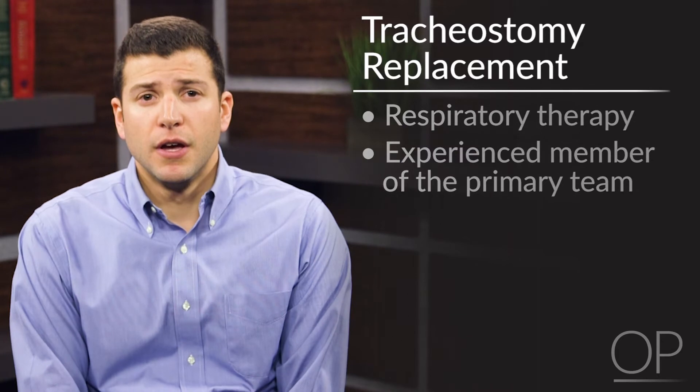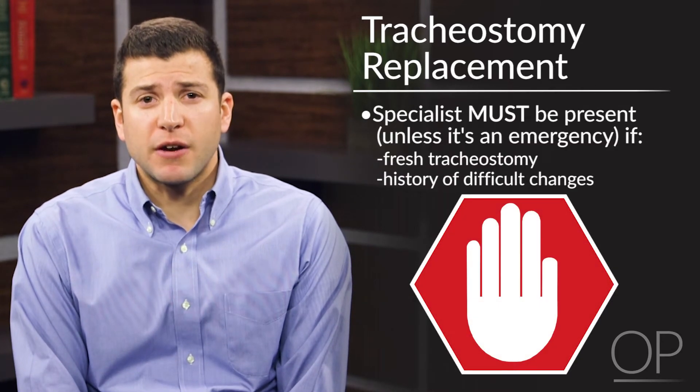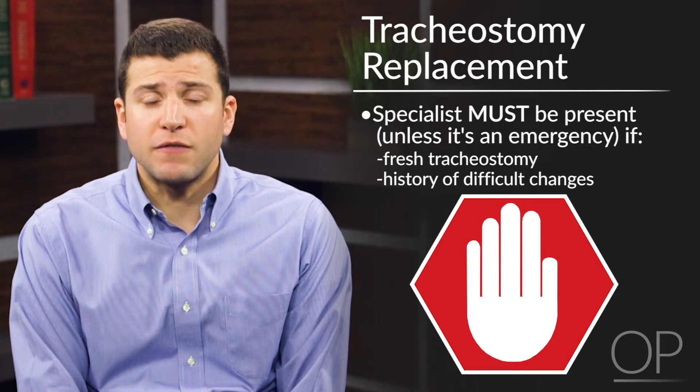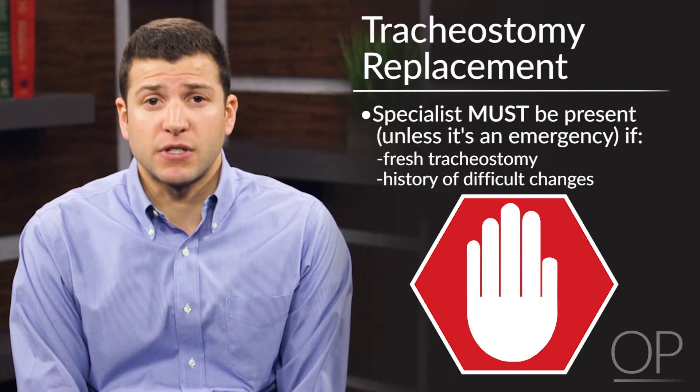If none of these maneuvers helped, the tracheostomy tube may need to be replaced. If this is a well-established tracheostomy tract, changes may be performed by respiratory therapy or by an experienced member of the primary team. Replacement should not be attempted without a specialist present if there's a fresh tracheostomy or if there's a history of difficult tracheostomy tube changes, unless it's an emergency. If you still can't pass suction after the previous steps, or if the patient's condition does not allow you to perform these steps safely, call otolaryngology for assistance as tracheoscopy may be required.